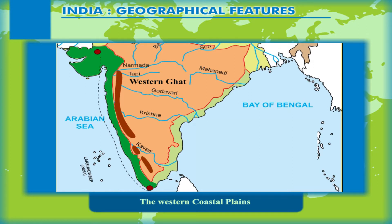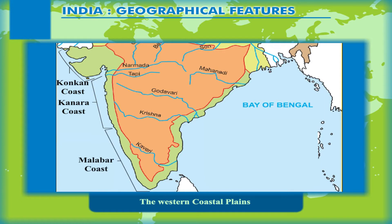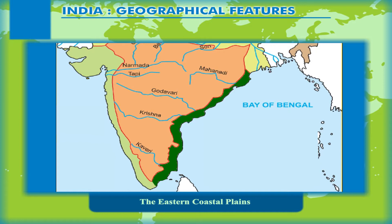The average width of the Western Coastal Plains is approximately 65 kilometers. The coastal areas are divided into three regions from north to south: the Konkan Coast, the Kanada Coast, and the Malabar Coast. The Western Coastal Plains have a number of lagoons and backwaters called kayals, like the Vembanad.